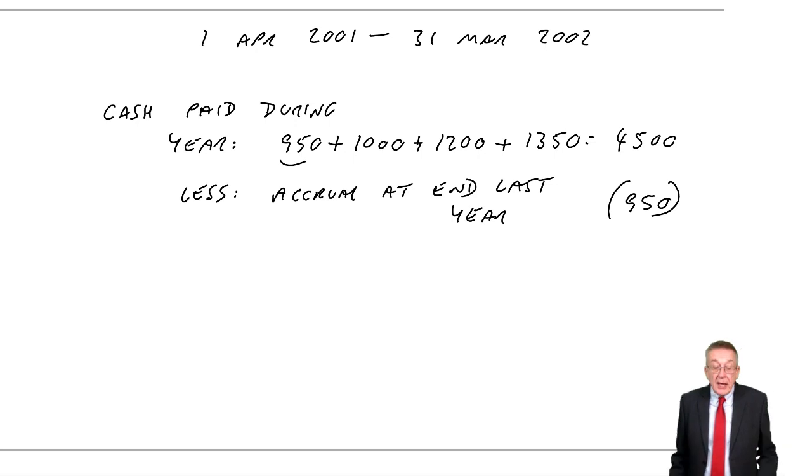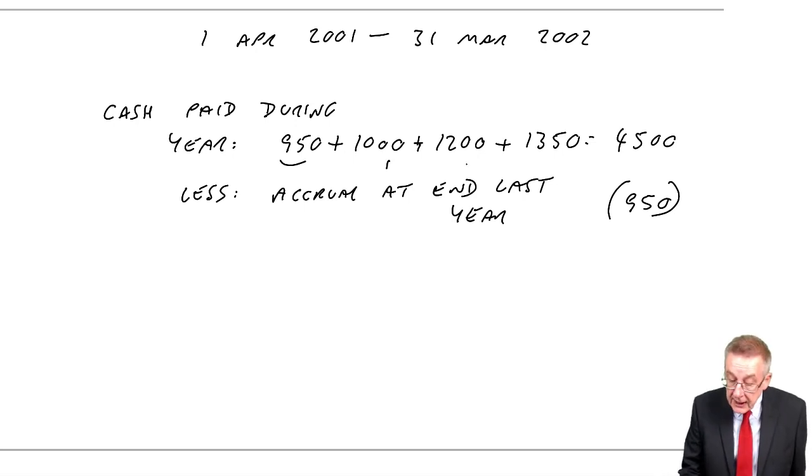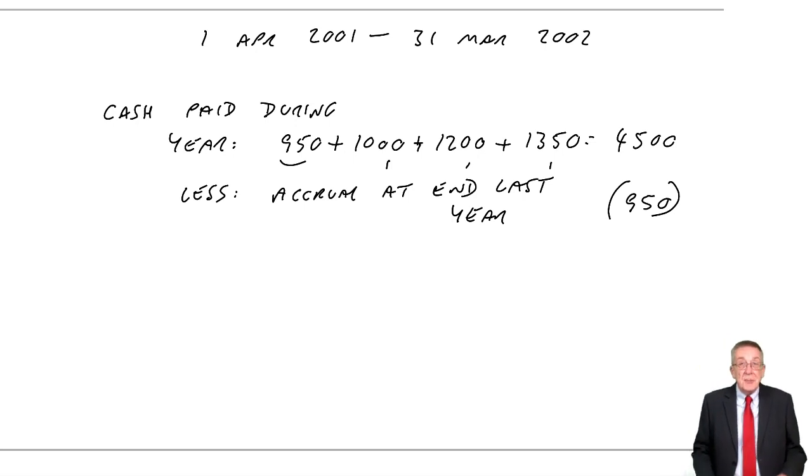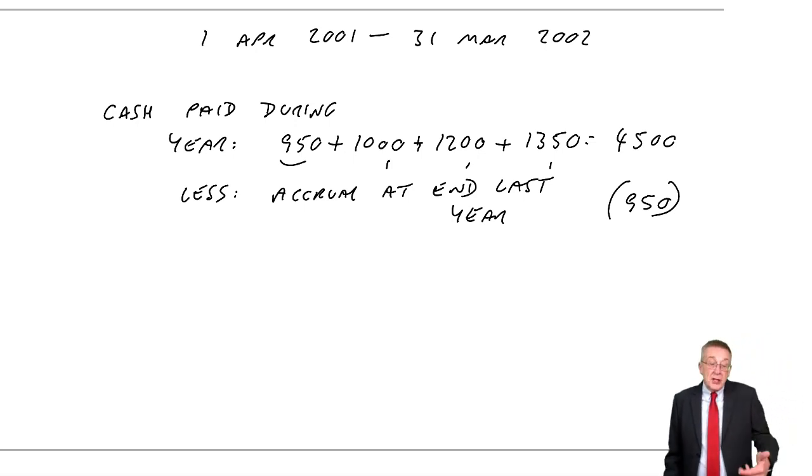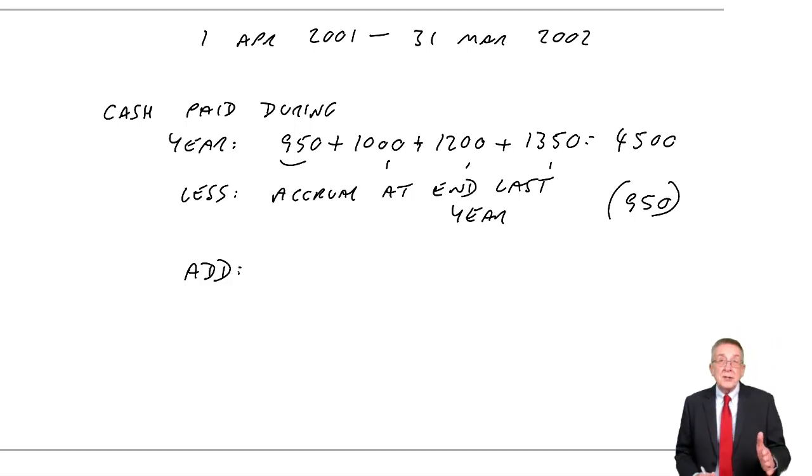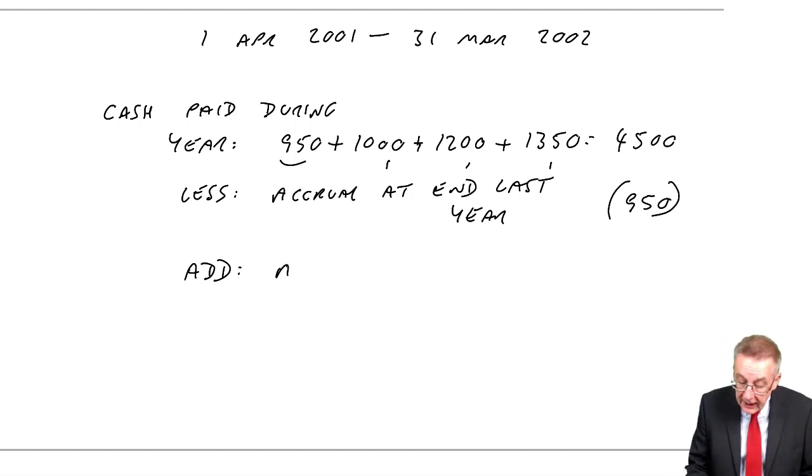Because I want the expense for this year, and the £4,500 included that payment for three months of last year. We're not finished, though, because although that does leave us with those three payments which were this year's expense, we've only actually paid up to the end of December. We still owe it for January, February, March. And so we need to add the cost of those last three months.